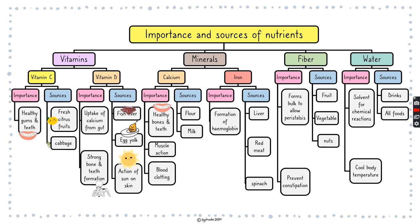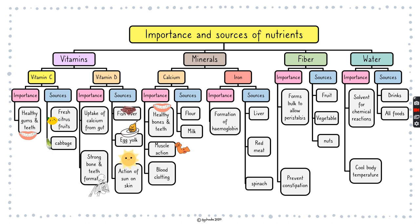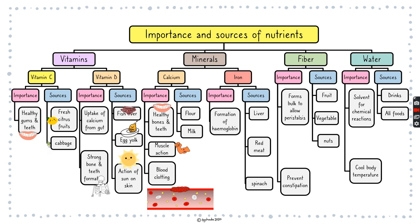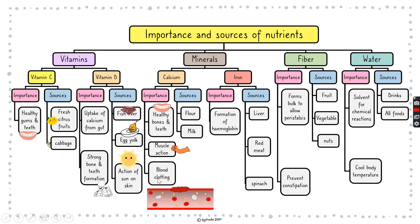Minerals like calcium: the importance is also healthy bones and teeth, and remember that you need vitamin D to help you absorb calcium. Calcium is also important for muscle action — you need minerals for your muscles to move. It's also important for blood clotting. This shows a blood vessel with platelets forming a scab-like clot, and you need calcium for that, so it helps whether you have a cut internally or externally.